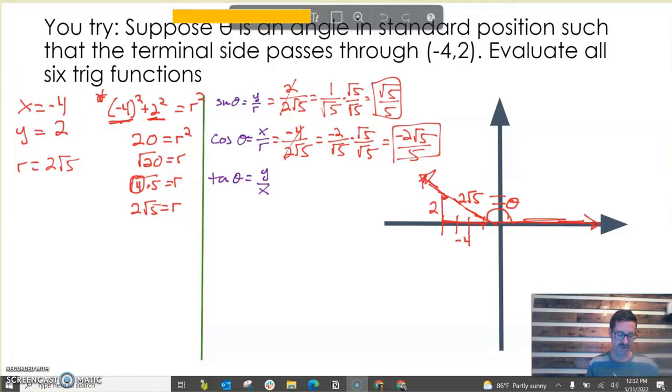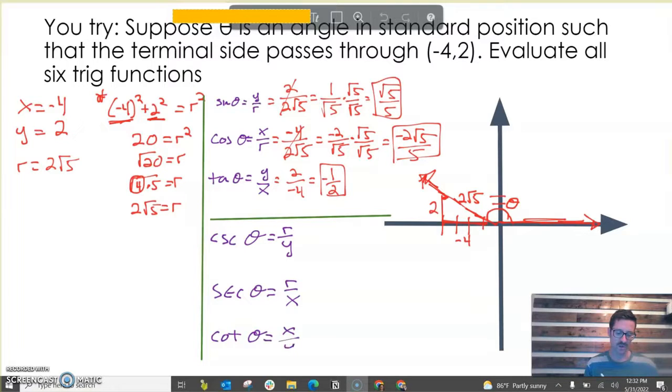Now for tan theta, y over x, thank goodness we don't have to deal with the radical. That's just -1/2. Now we need to do our reciprocal functions. The reciprocal of sine theta is cosecant theta. The reciprocal of cosine theta is secant theta. And the reciprocal of tan theta is cotangent, which is just x over y.